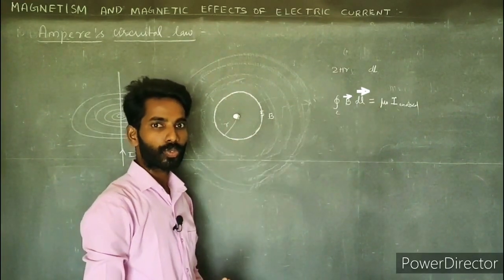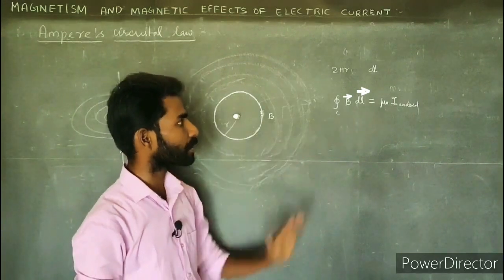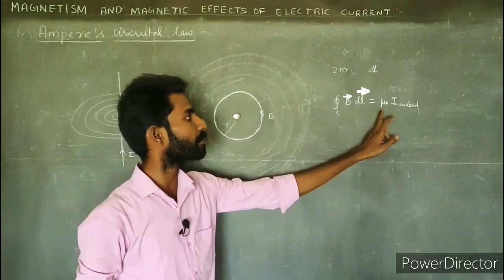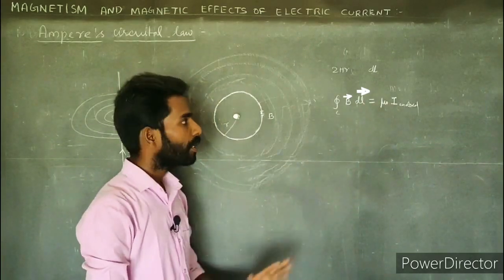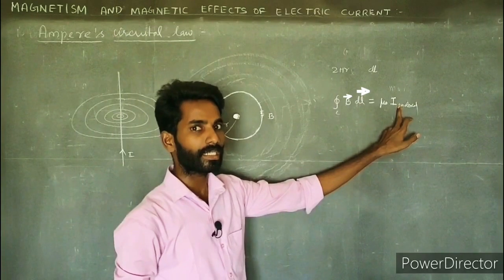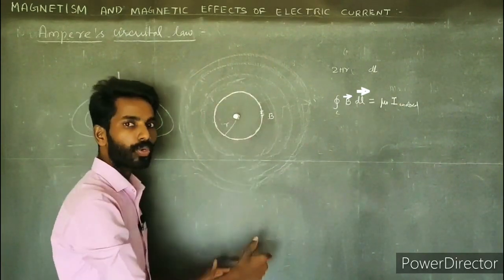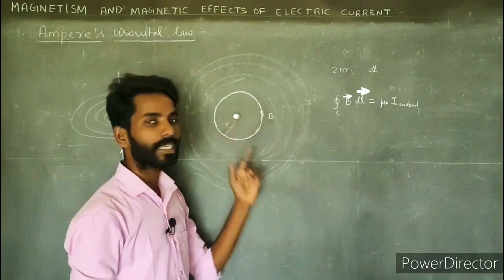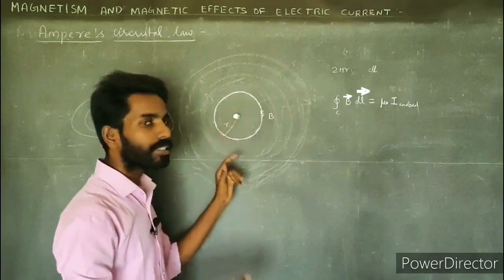Using μ₀, this is the Ampere circuit: the closed integral of B·dl is equal to μ₀ times the enclosed current — that is the Ampere circuit law. This is the net enclosed current. Whether the loop is a circle or a different shape, we can find the net current enclosed.